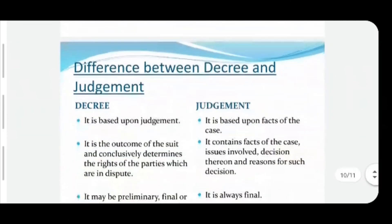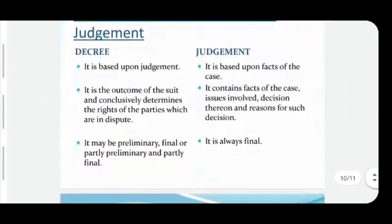A decree is the outcome of the suit and it conclusively determines the rights of the parties which are in dispute. That means a decree comes after the judgment and gives a conclusion to the disputed rights of the parties. While a judgment contains: facts of the case, issues involved, decision thereon, and reasons for such decisions. Finally, a decree may be preliminary, final, or partly preliminary and partly final, while a judgment is always final.